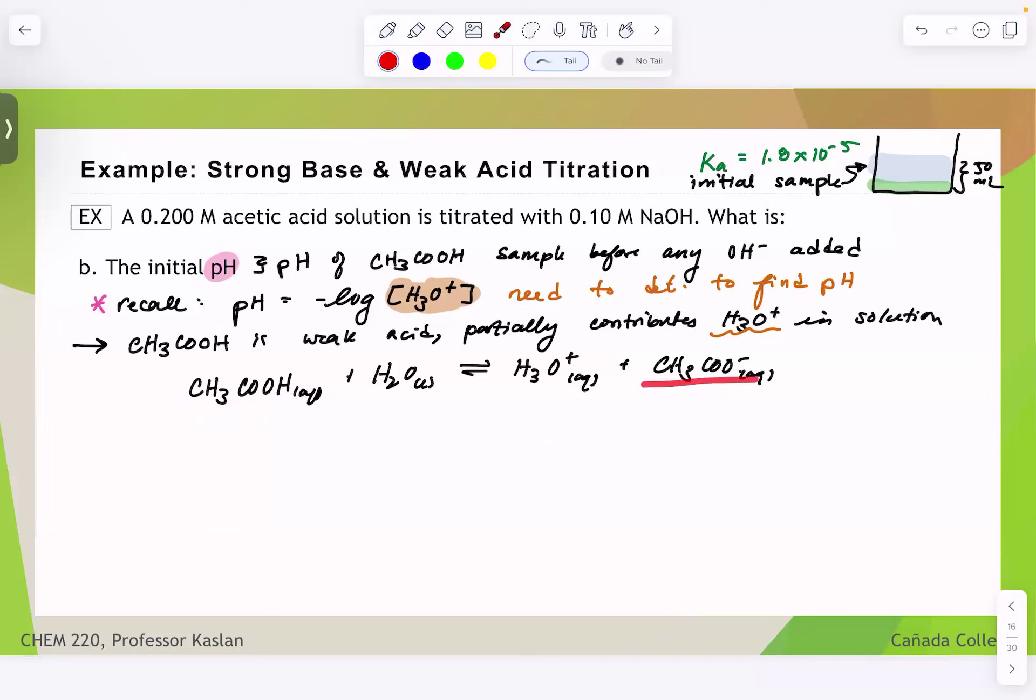So again, the difference between conjugate pairs is only one H, right? This is the protonated, this is the deprotonated version, and they have to be ions that are the deprotonated versions of a weak substance or vice versa, ions that are the protonated version of a weak, like base substance, which we'll get into later.